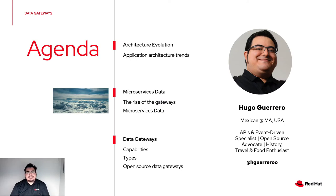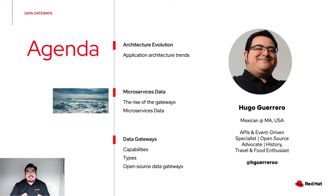We will be covering a couple of topics in the agenda for this session. We will be talking about the architecture evolution and how applications have been changing in the way they use their components and how they're handling the cloud-native nature of distributed systems. We'll also be talking about microservices data and what problem the API gateway solved when it started to rise a few years ago, as well as how to handle data under the microservices pattern.